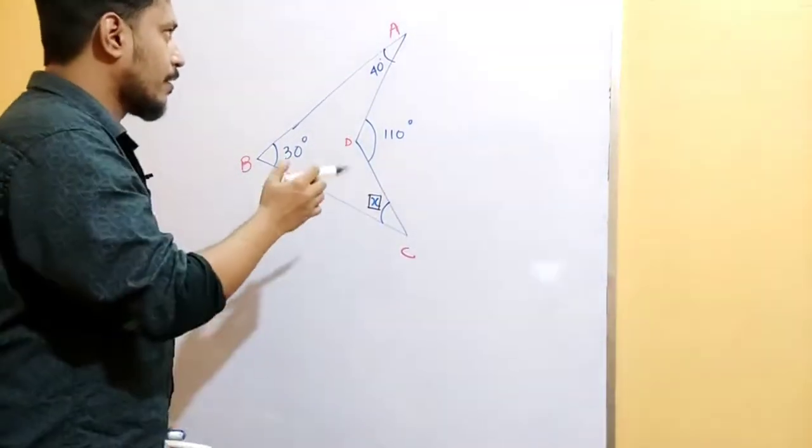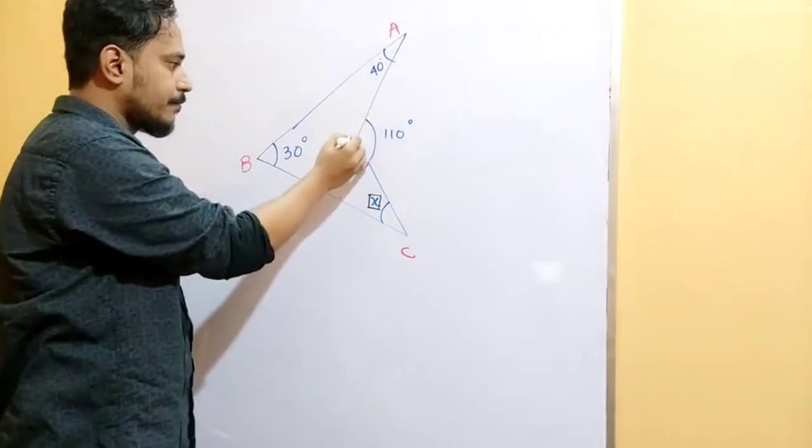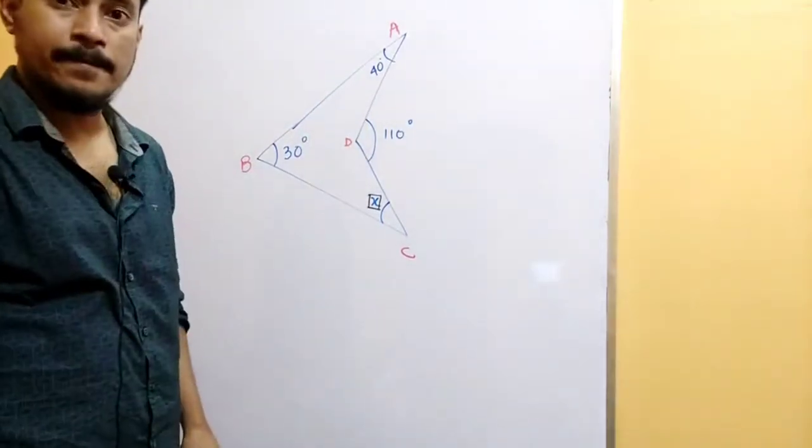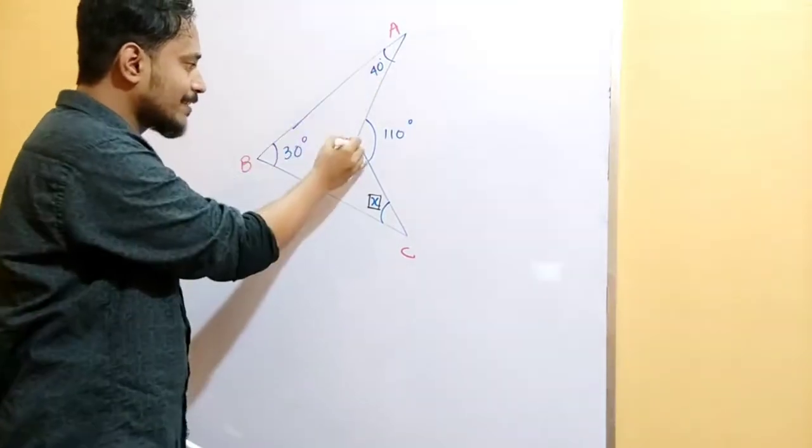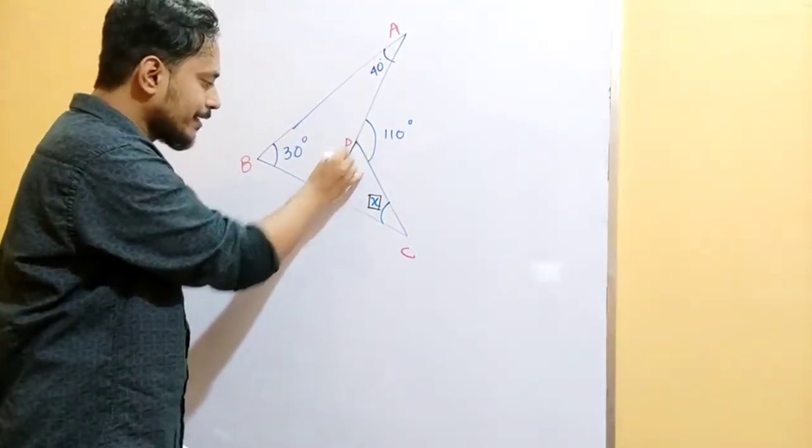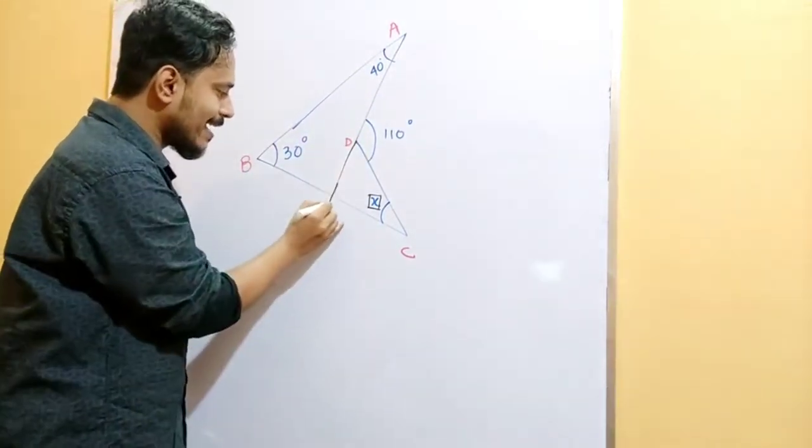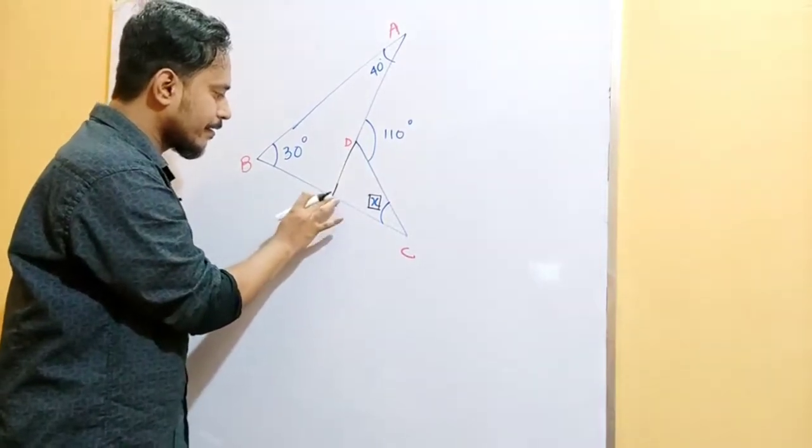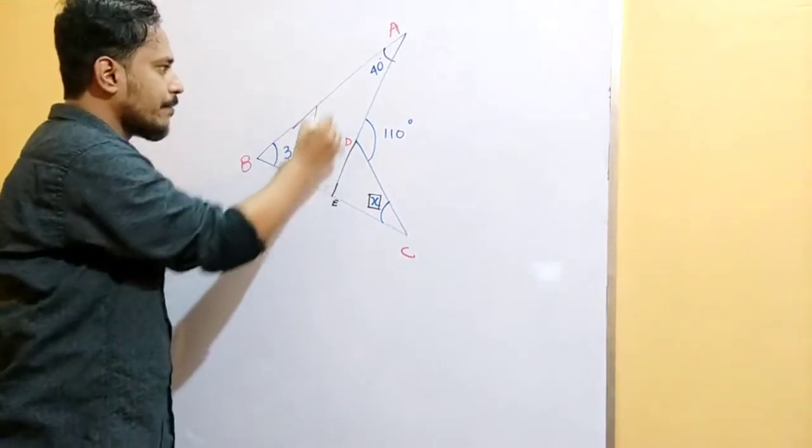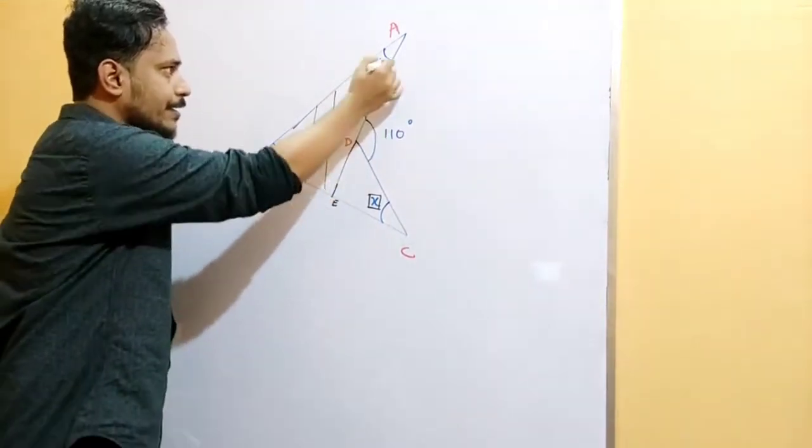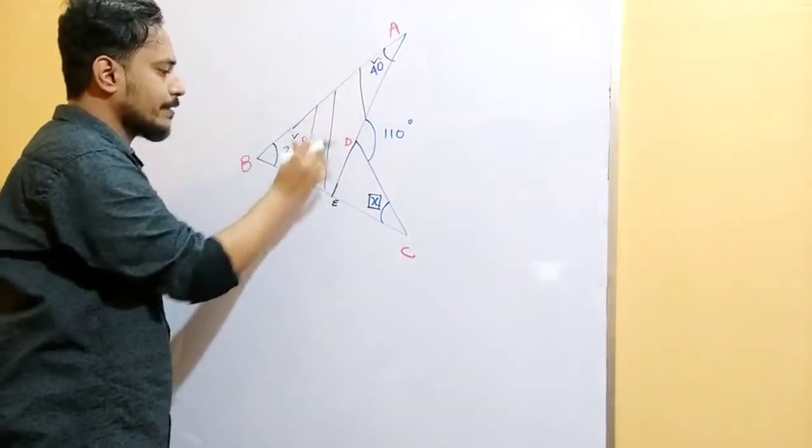If we extend that line to AB which intercepts BC at E. Now, in triangle AEB, this triangle is 40, this angle is 30.